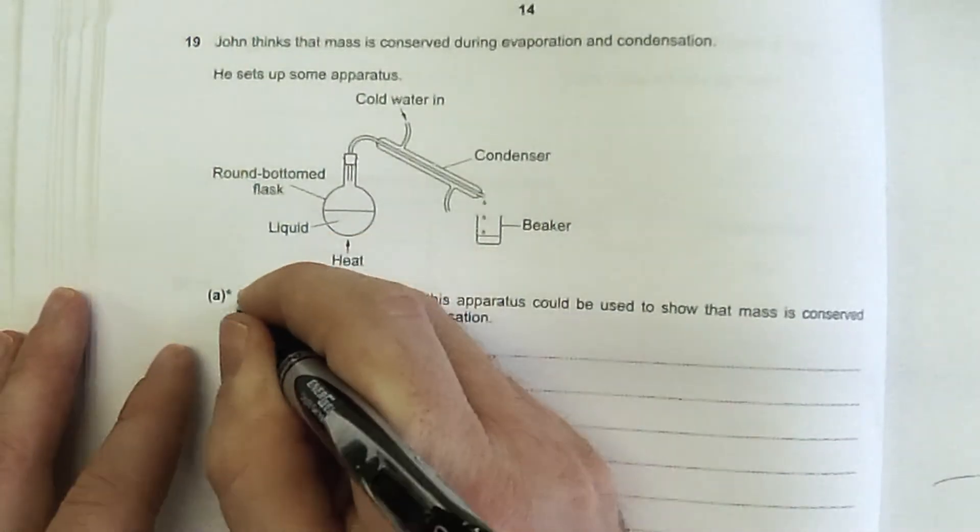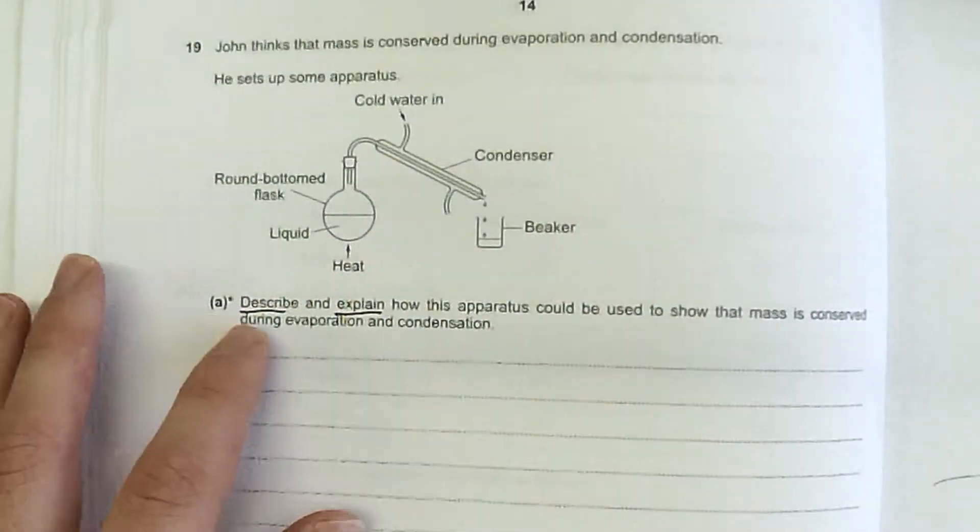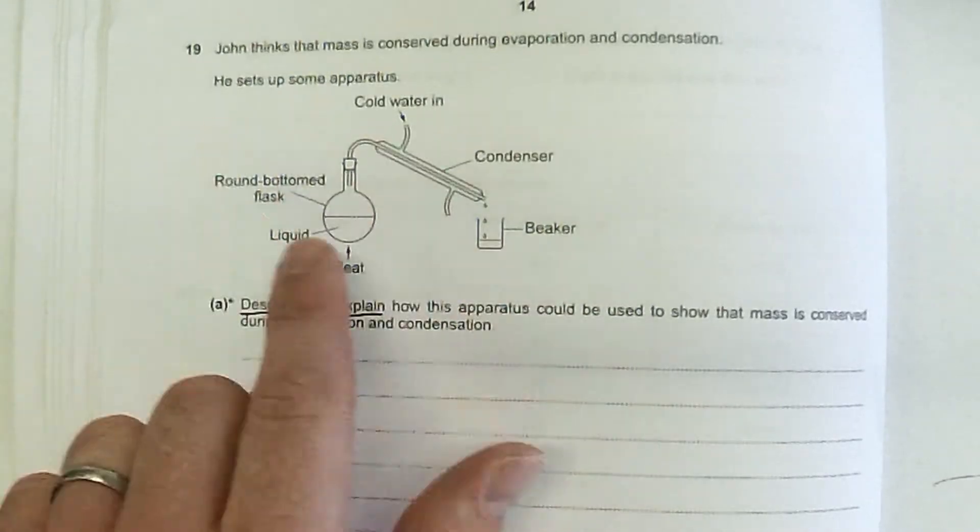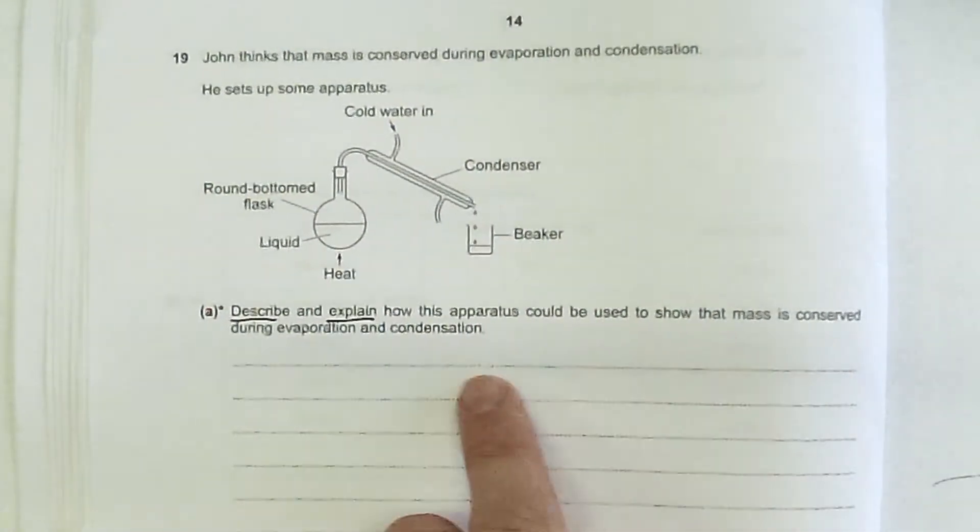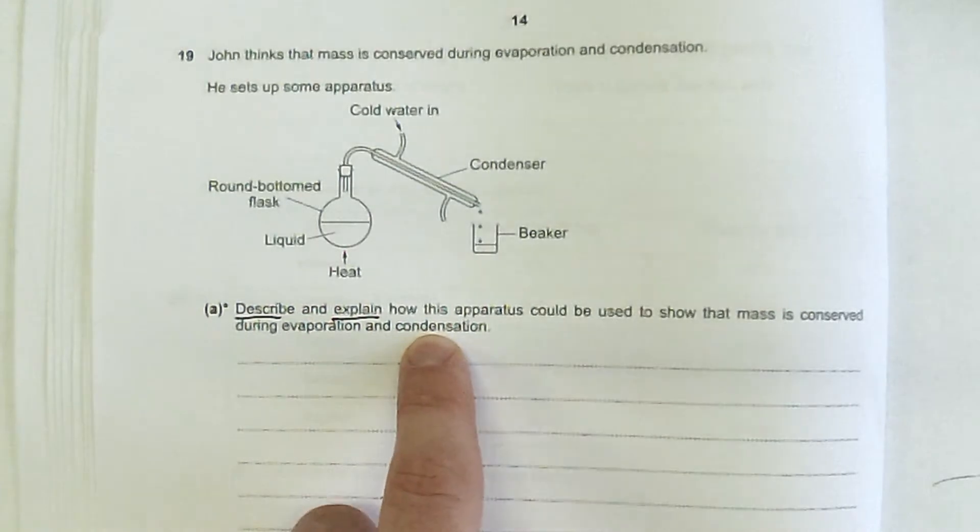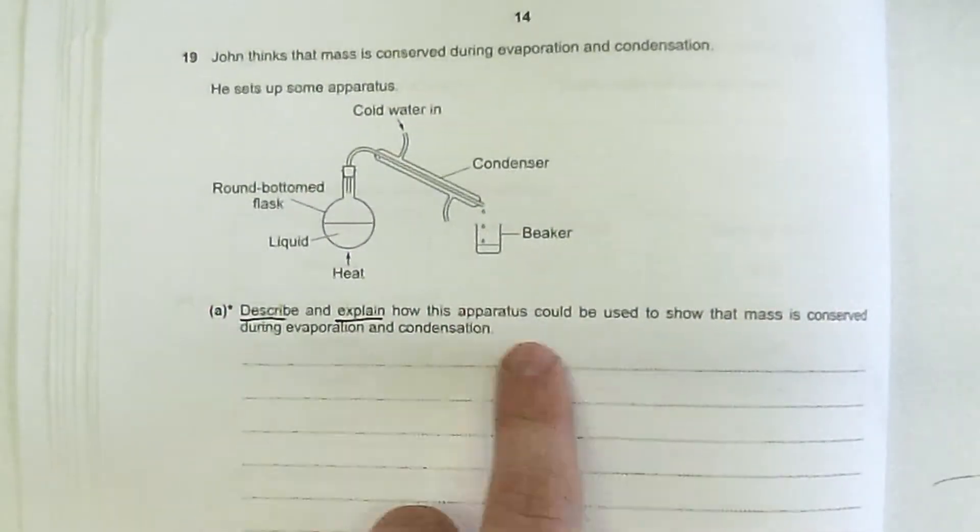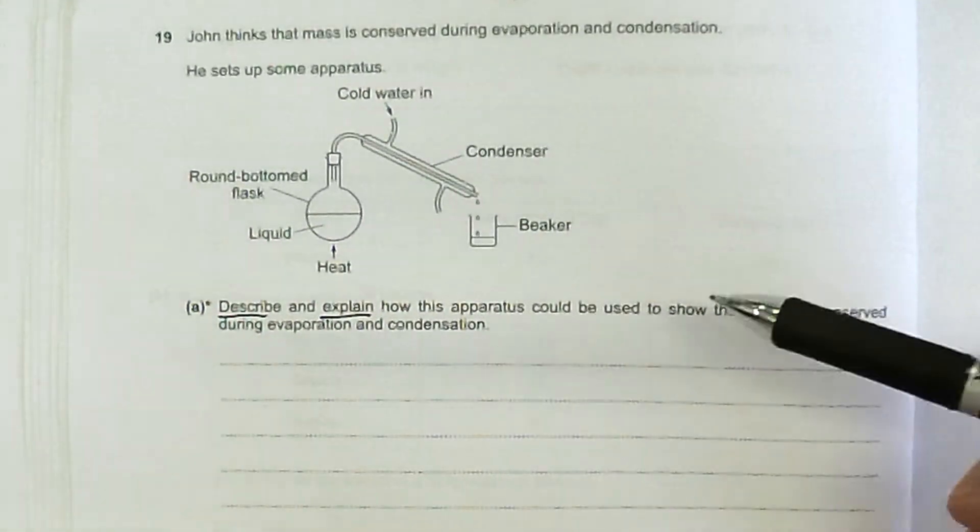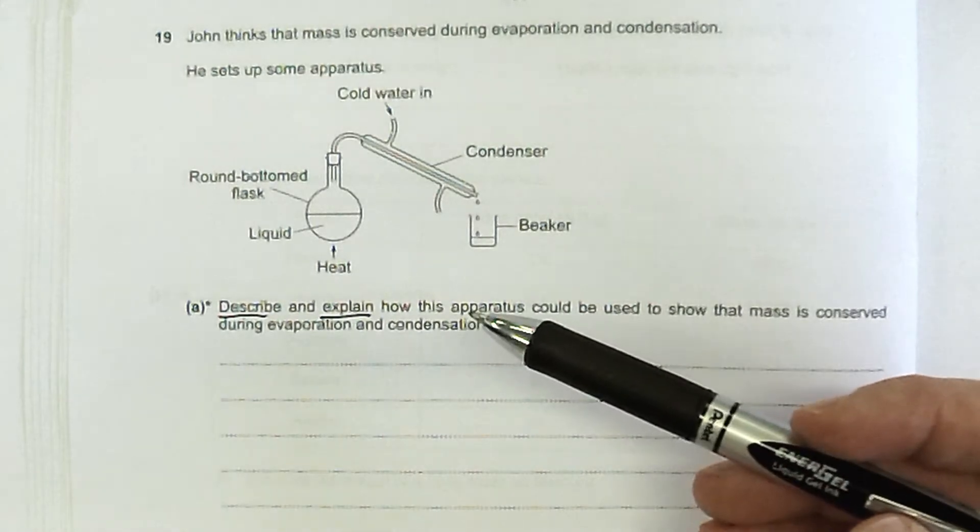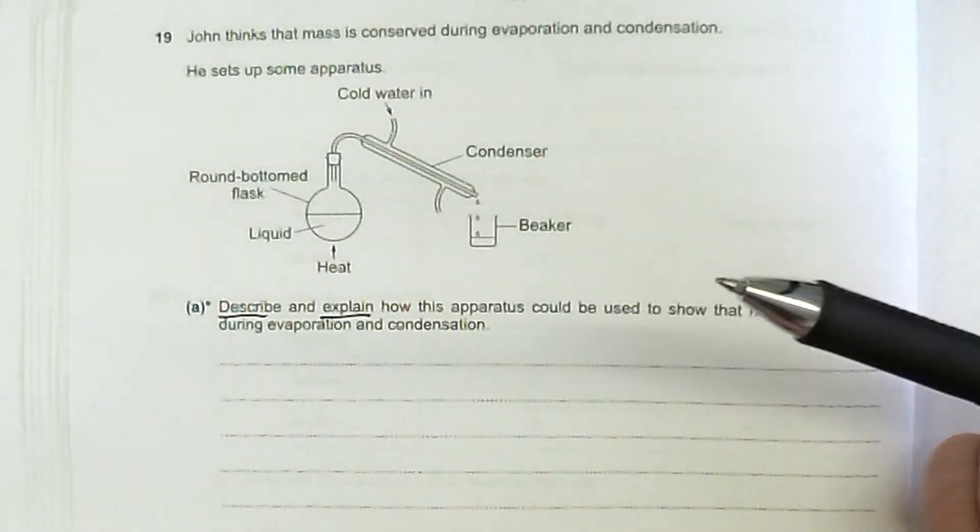I would still approach it in the same way. Underline the command words: describe and explain. How this apparatus could be used to show that mass is conserved during evaporation and condensation. So I need to describe what it is and explain how this shows mass is conserved, and how it does evaporation and condensation.